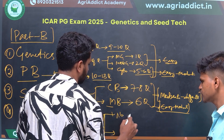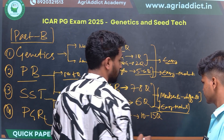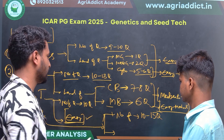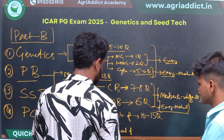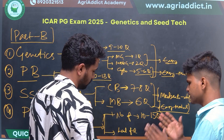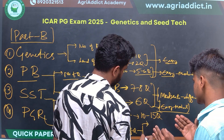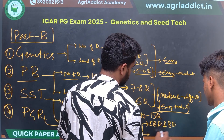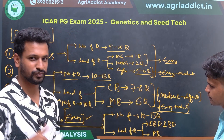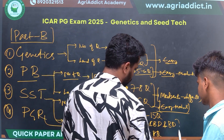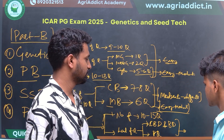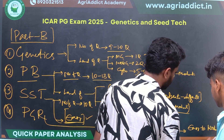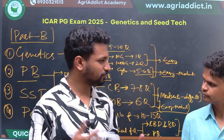For PGR, there were more questions this time — nearly 10 to 15 questions. The level was easy to moderate. Most questions were concentrated from two sections: CBD and Biodiversity Act, and Plant Quarantine. Even for a Seed Technology student, most PGR questions felt easy to moderate, with only one or two being difficult.